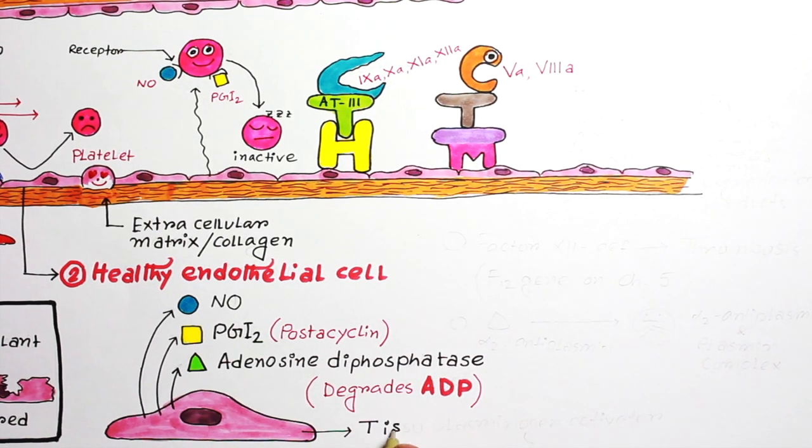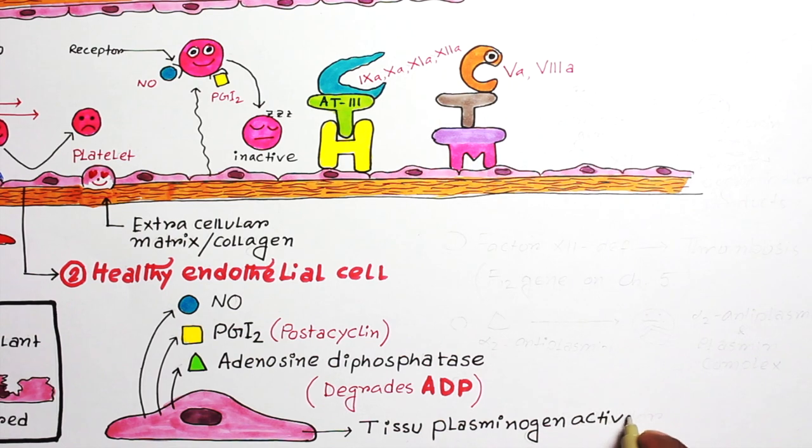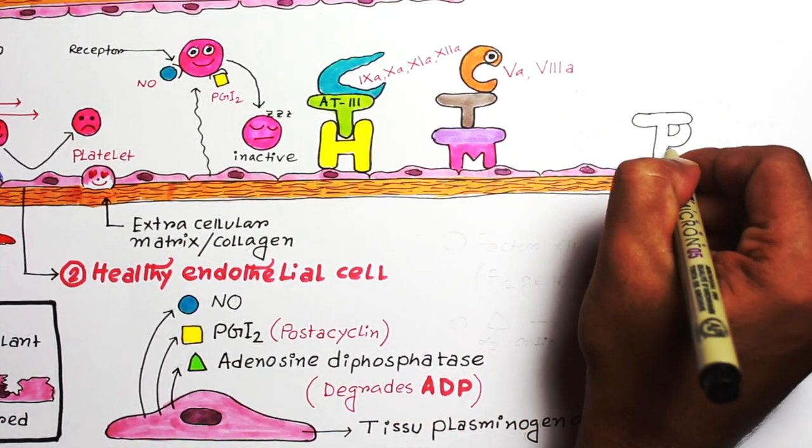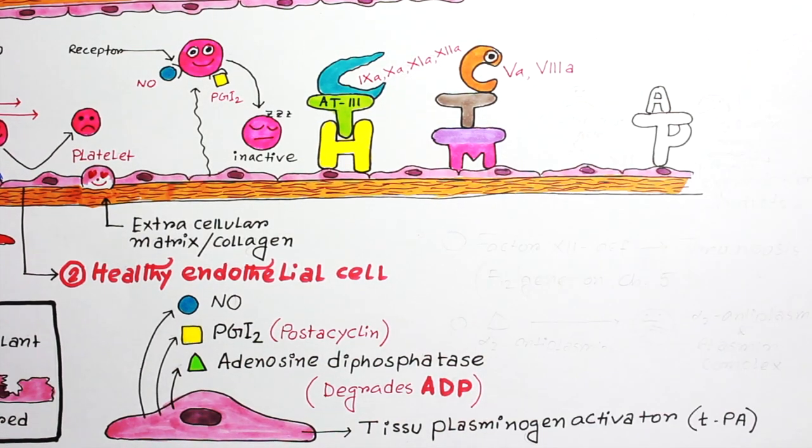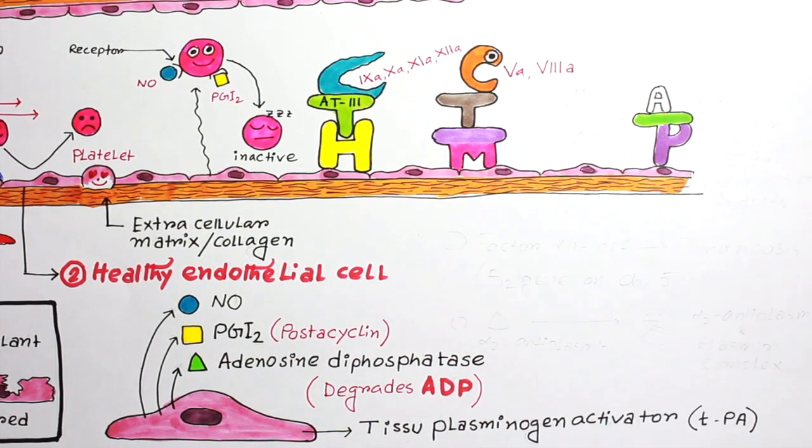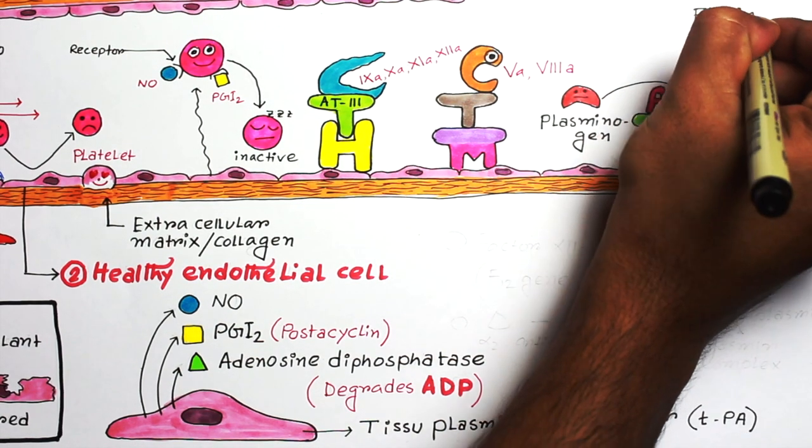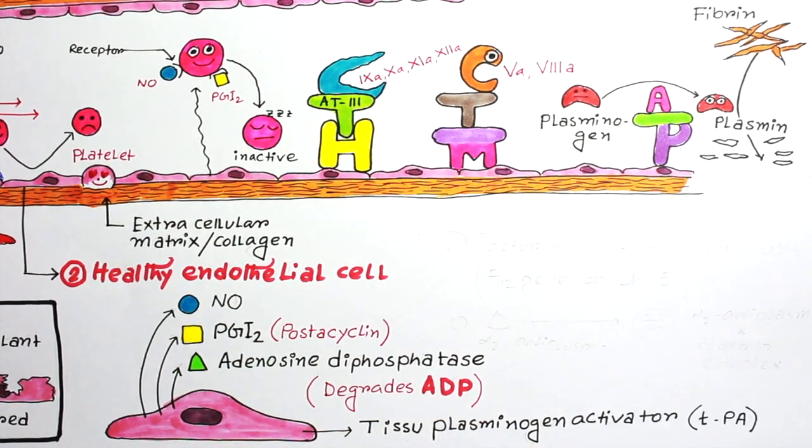Healthy endothelial cells also have the power to destroy fibrin molecules. They produce a substance called tissue plasminogen activator, which can convert plasminogen to plasmin. And plasmin has the ability to cut or degrade the fibrin molecule into fibrin degradation products.